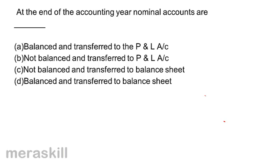At the end of the accounting year, nominal accounts are — normally nominal accounts are not balanced; they are totalled and transferred to the profit and loss account. So the correct answer should be B: not balanced and transferred to profit and loss account.